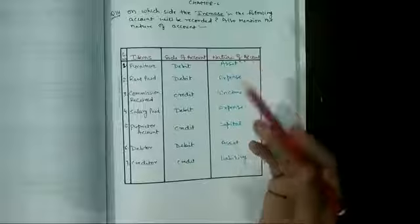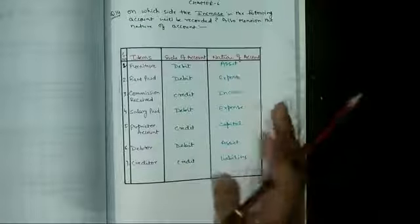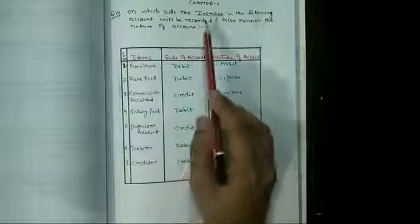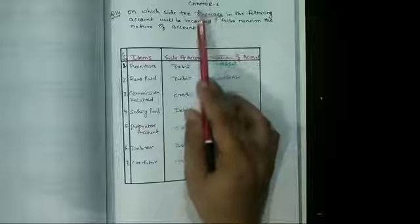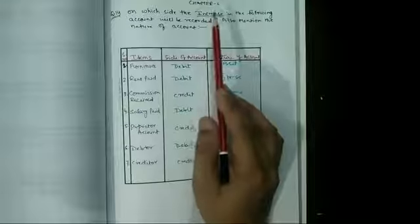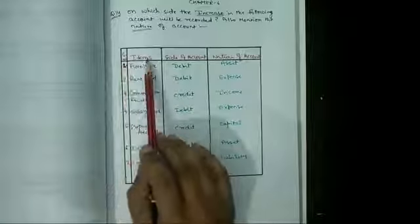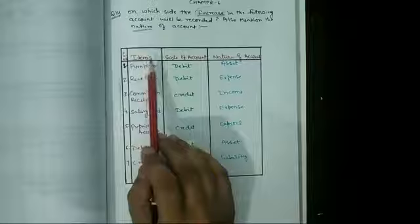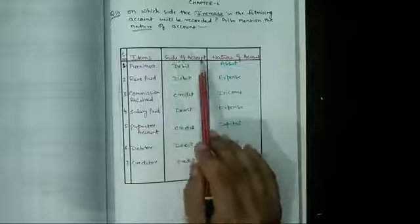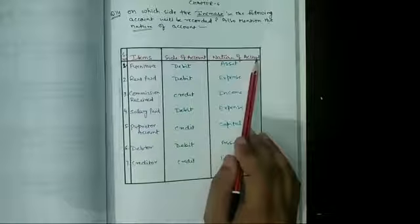Also mention the nature of account. Means हमें ये बताना है कि जो भी हमें items दे रखे में, account दे रखे में हैं, वो account की किस side में record होंगे अगर उनकी value increase हो रही होगी, और फिर उस account का हमें nature भी mention करना है. तो कैसे हम solve करेंगे? हमें table बना लेंगे यहां पर - serial number, items, and we can also record the name of accounts, side of account and nature of account.